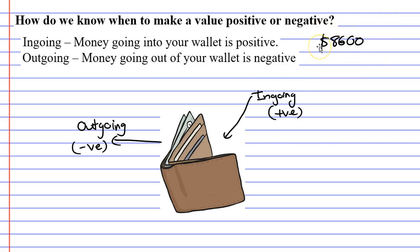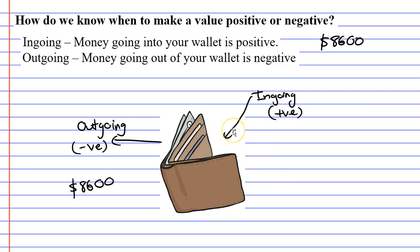Because eventually she wants to save up and have $30,000, our $8,600 is an outgoing. She's taken this money out of her wallet and put it into an investment account. I like to think of it as money that you can't spend — it's out of your wallet. She can't spend it because it's in her investment account. Because of that, we need to write that present value is a negative amount.